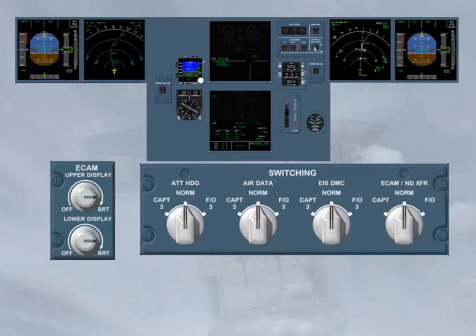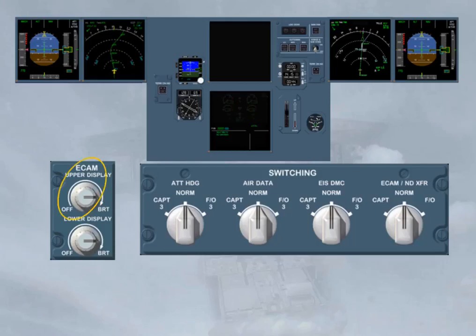If the upper ECAM DU is blanked, the lower DU automatically shows the EWD image instead of the current SD image. As there is no caution message on the ECAM, you should refer to the QRH in order to find the related actions about that display unit failure. These actions are to turn off the affected DU and to use the ECAM ND transfer selector in order to recover a second DU for ECAM operation.